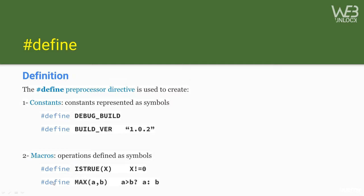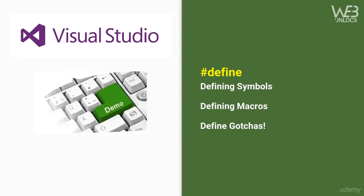Here's another example of a macro: #define MAX(a, b) ((a) > (b) ? (a) : (b)) — this takes two arguments and returns the maximum. The preprocessor performs text substitution before compilation: the first step is replacing all preprocessor directives with their actual values, generating a modified temp file that gets compiled. In the next lecture we'll switch to Visual Studio to use #define to define symbols and macros, and learn about some gotchas to watch out for.